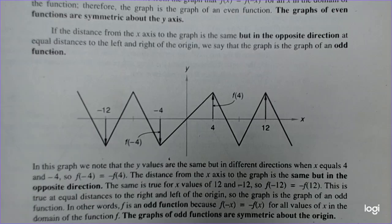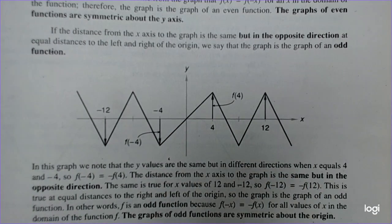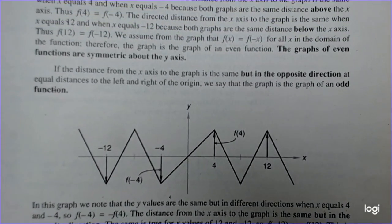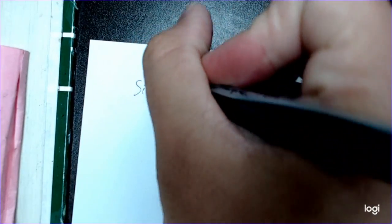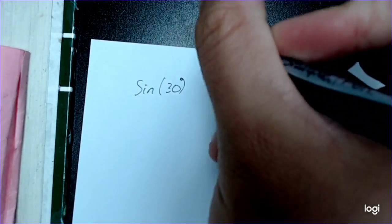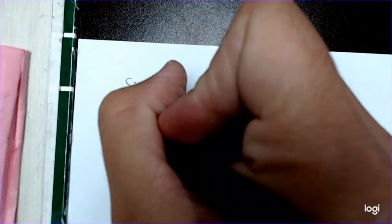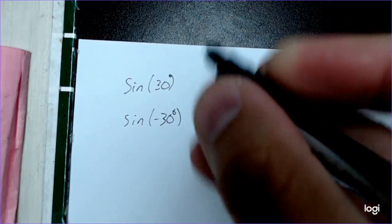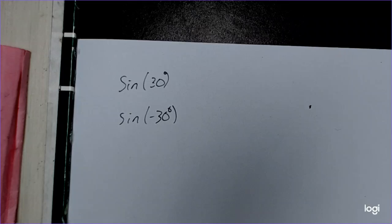Odd functions are symmetric about the origin — meaning zero comma zero — and they do opposite movements as you make adjustments to the graph. Now let's talk about this algebraically. We'll compare sine and cosine. Let's say we've got the sine of 30 degrees, and then we want to do the sine of negative 30 degrees — the negative function — and see if sine is an even or odd function.